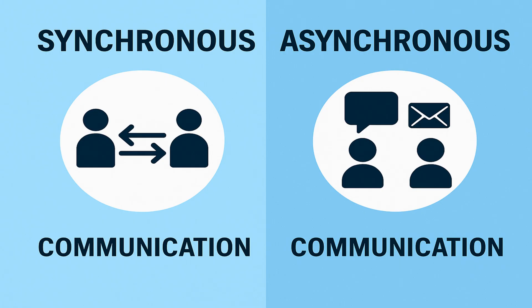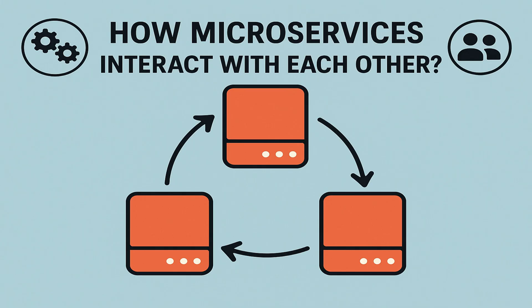There are mainly two ways for services to communicate: synchronous and asynchronous communication. This is very important from the interview point of view as well. One of the most asked interview questions from microservices is how your microservices interact with each other. So let's first start with synchronous communication.